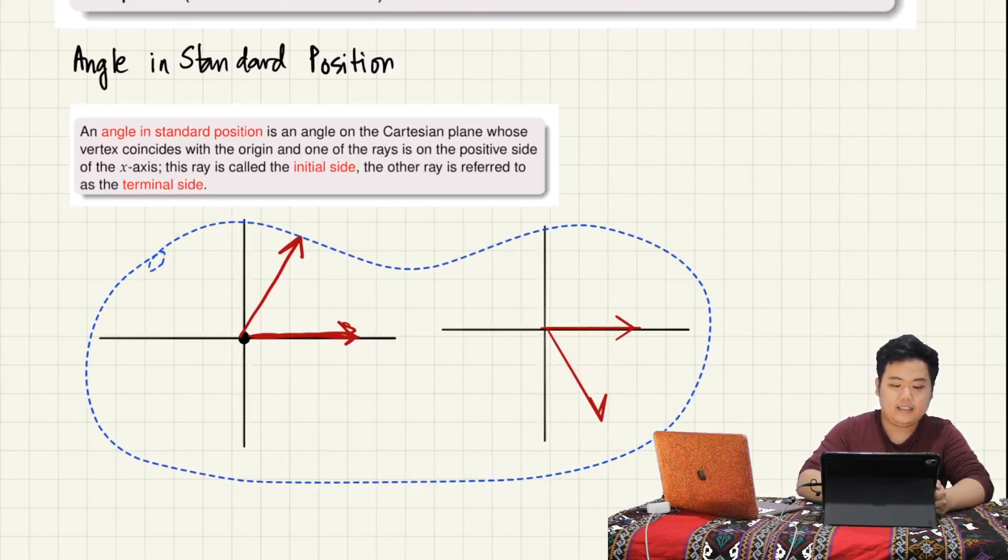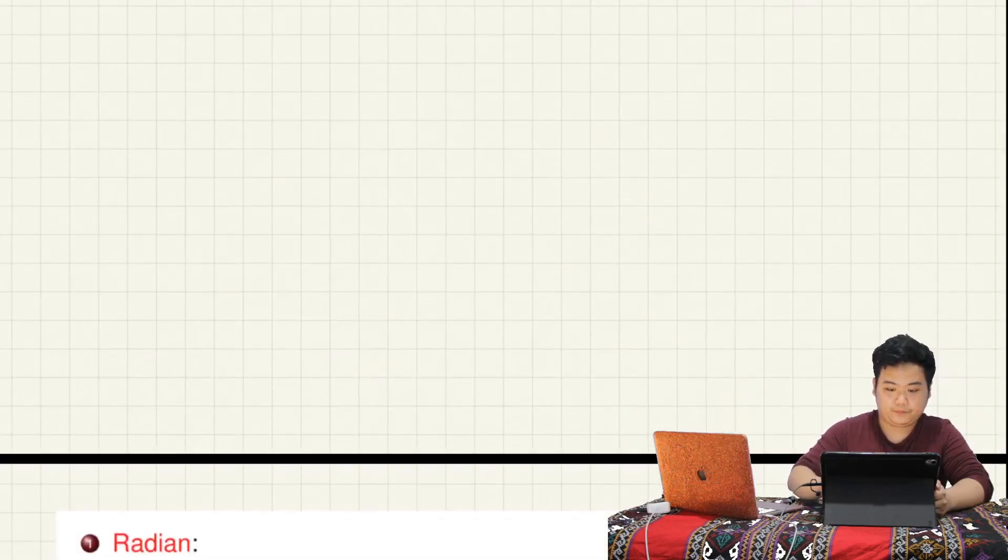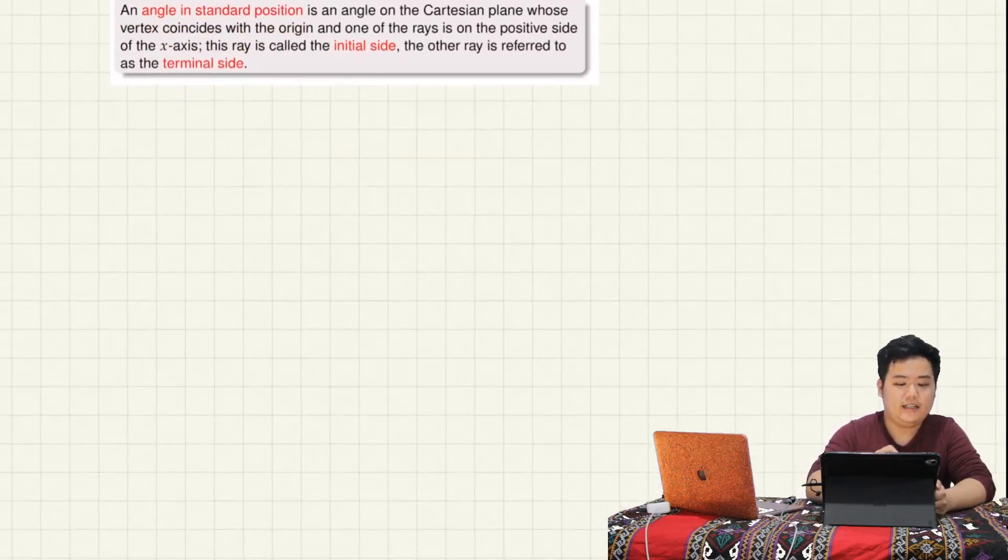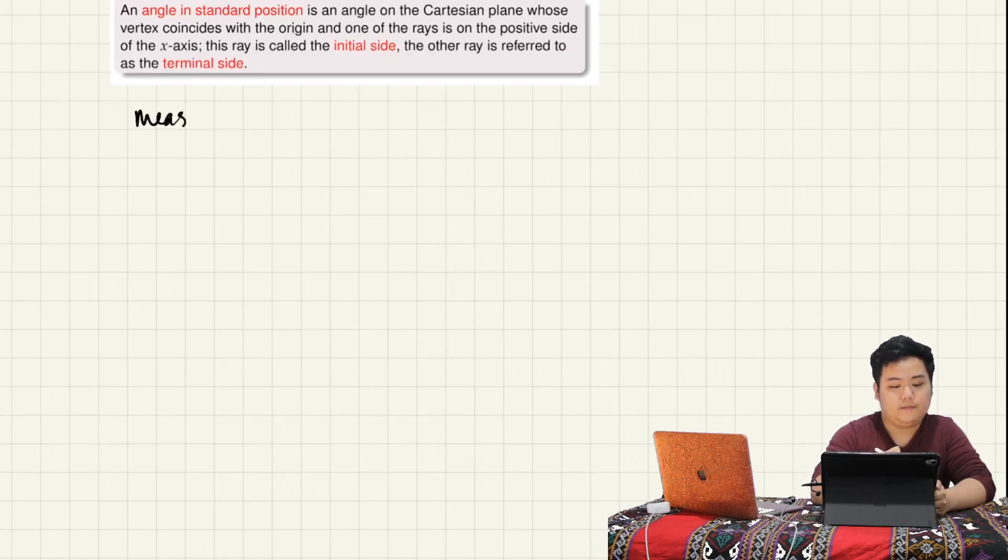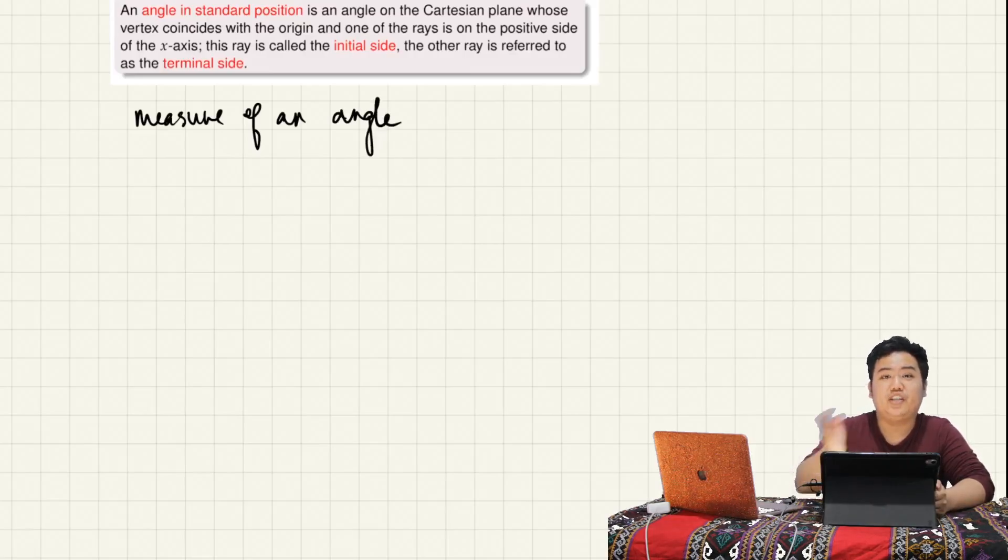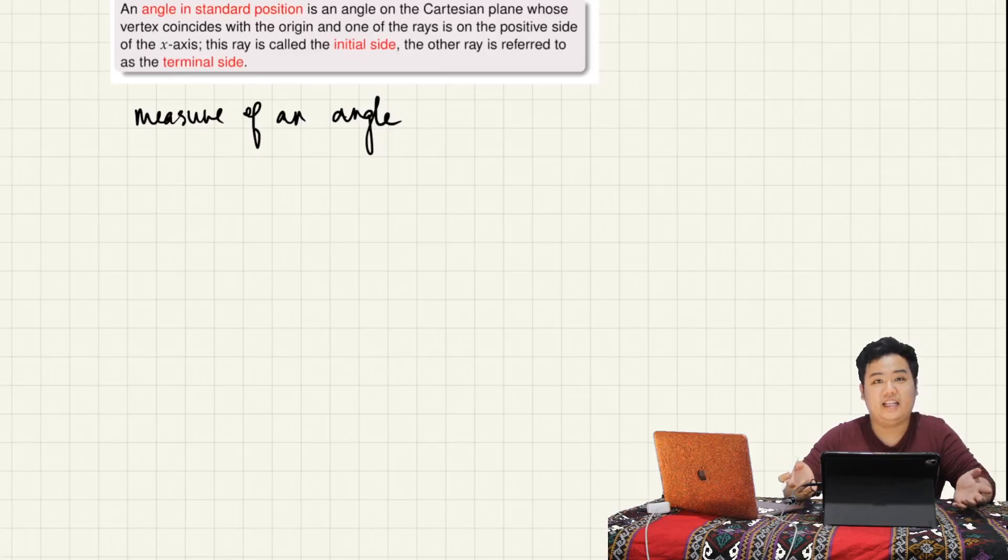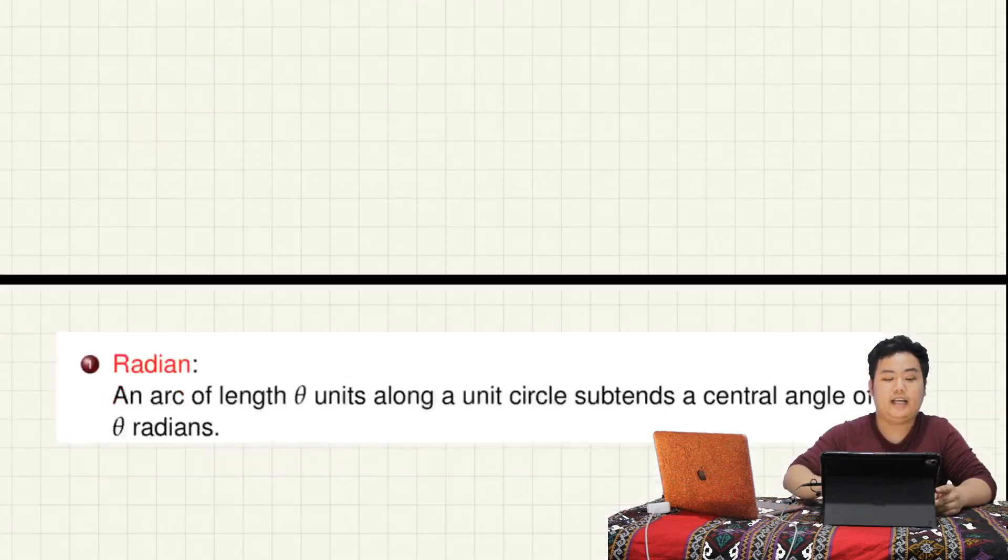Itong mga angles na to may measure iyan. What do we mean by measure ng isang angle? Pag sinabing measure ng isang angle, roughly yun yung amount of rotation lang ng angle, kung gaano siya kabuka. The rotation is positive pag counterclockwise, negative kapag clockwise. We have learned in the past na ang measure ng isang angle may unit na degrees. Ngayon aaralan natin or magbibigay tayo ng another unit ng angle, which is the radian measure.